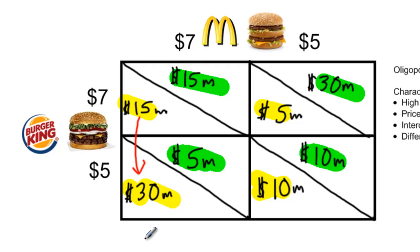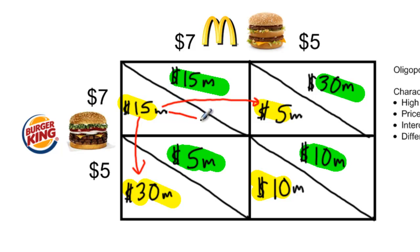What would Burger King want to do if McDonald's lowered its price? If McDonald's lowered its price and Burger King kept its price at seven dollars, Burger King's profits would fall from fifteen million to five million dollars — clearly not an optimal outcome. On the other hand, if Burger King were to match the price decrease, its profits would go from fifteen million to ten million dollars, which is clearly better than falling all the way down to five million dollars.